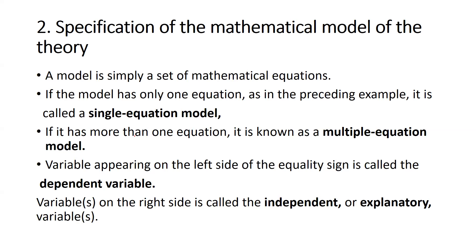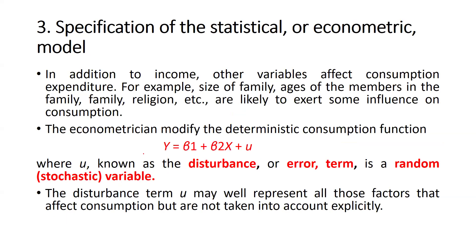A model is simply a set of mathematical equations. If the model has only one equation, as in this example, it is called a single-equation model. If there is more than one equation, it is a multiple-equation model. Variables appearing on the left side of the equality sign are called dependent variables, and variables on the right side are called independent or explanatory variables.